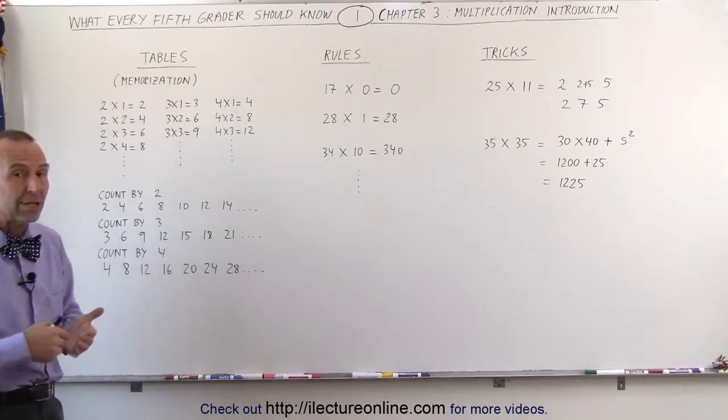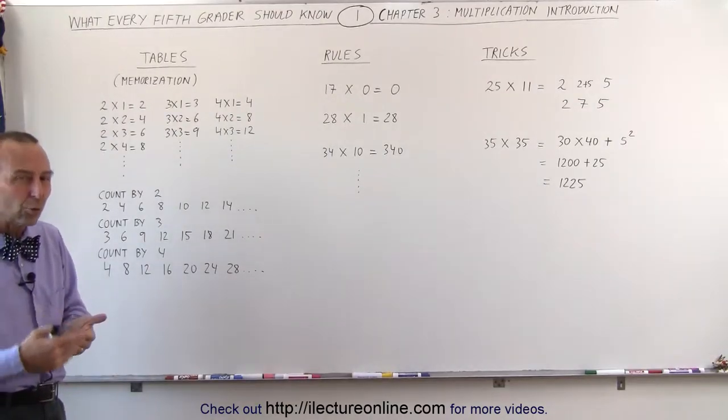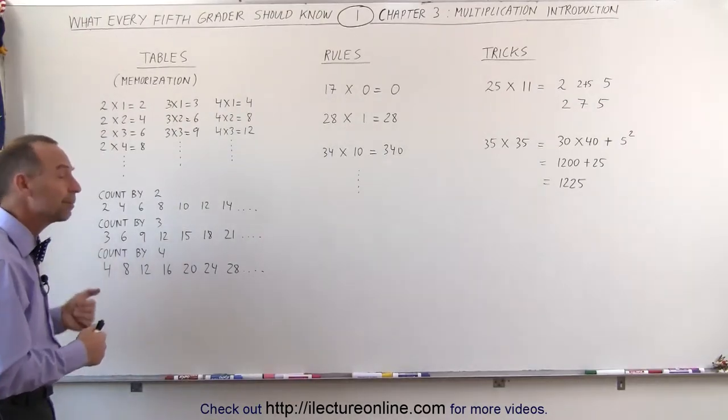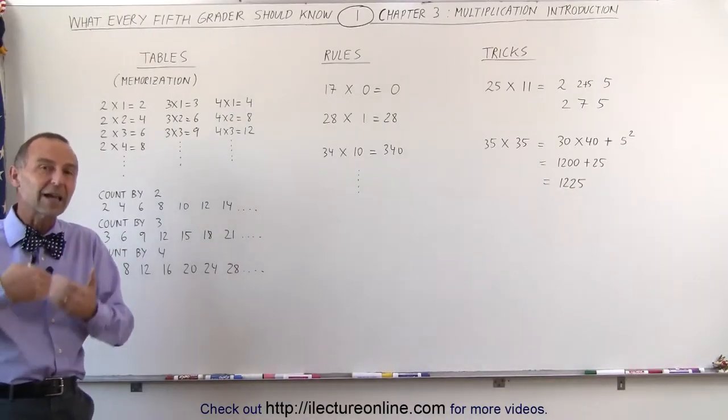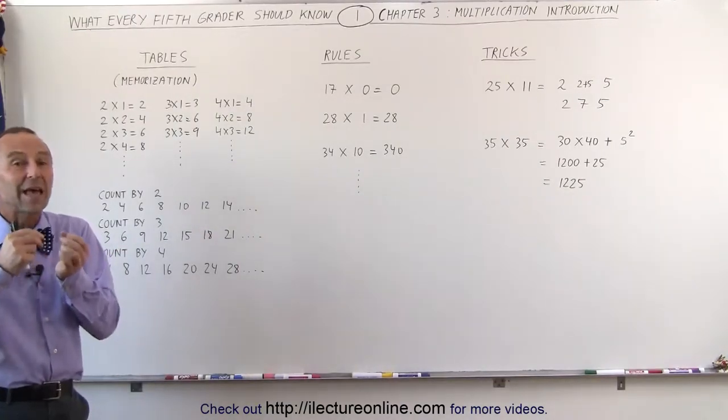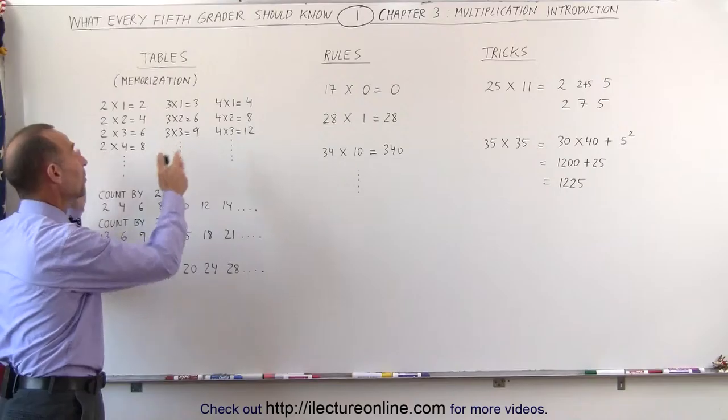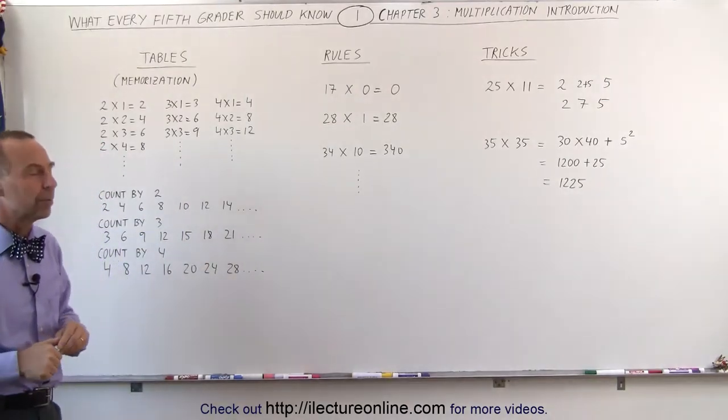Then you move on to counting by 3. You go 3, 6, 9, 12, 15. Then you go counting by 4, and then count by 5, and count by 6. It's another way to help you reinforce the memorization of the multiplication tables.